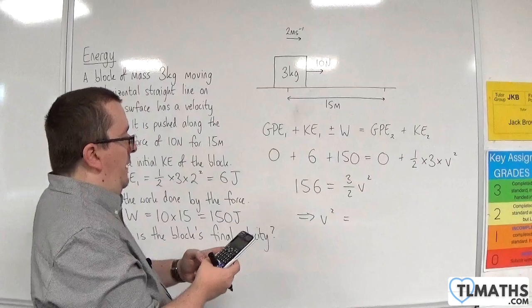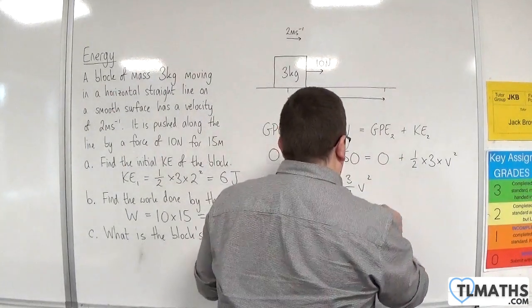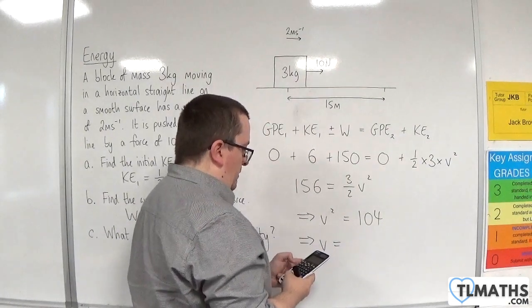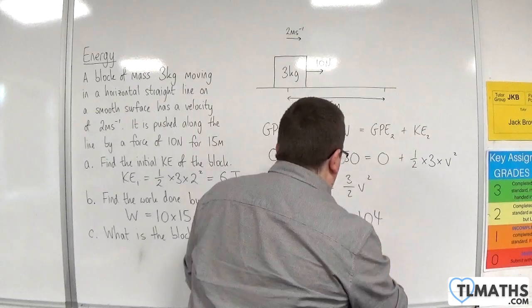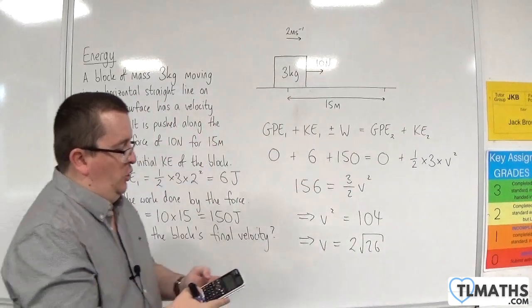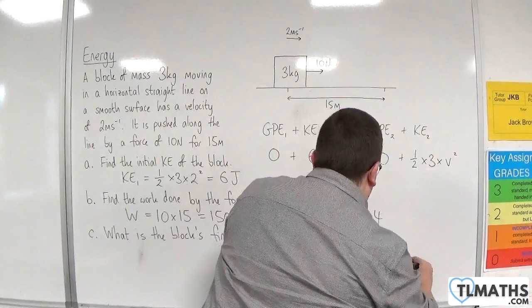So 156 times by two divided by three is 104. So v is going to be the square root of 104, which is 2 root 26, which is 10.2 meters per second to three significant figures.